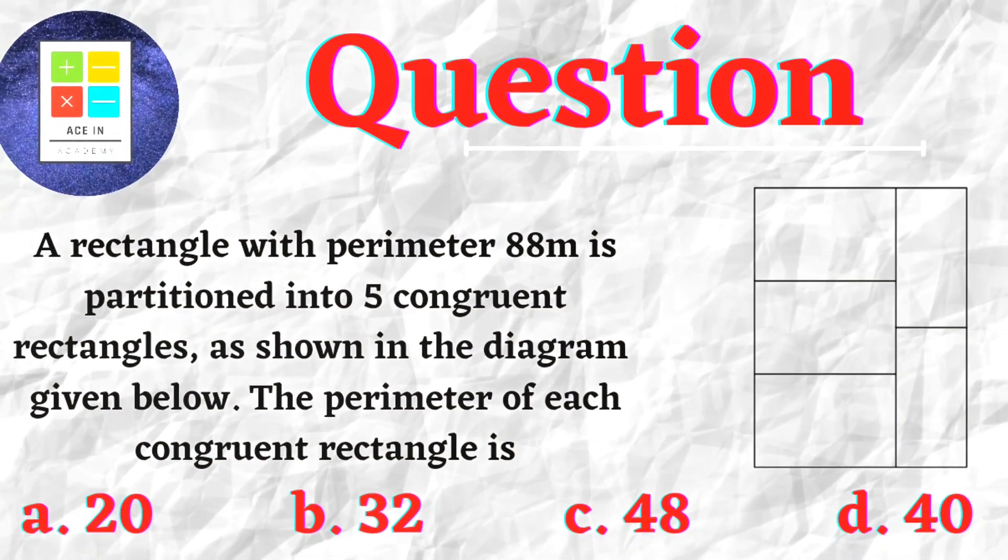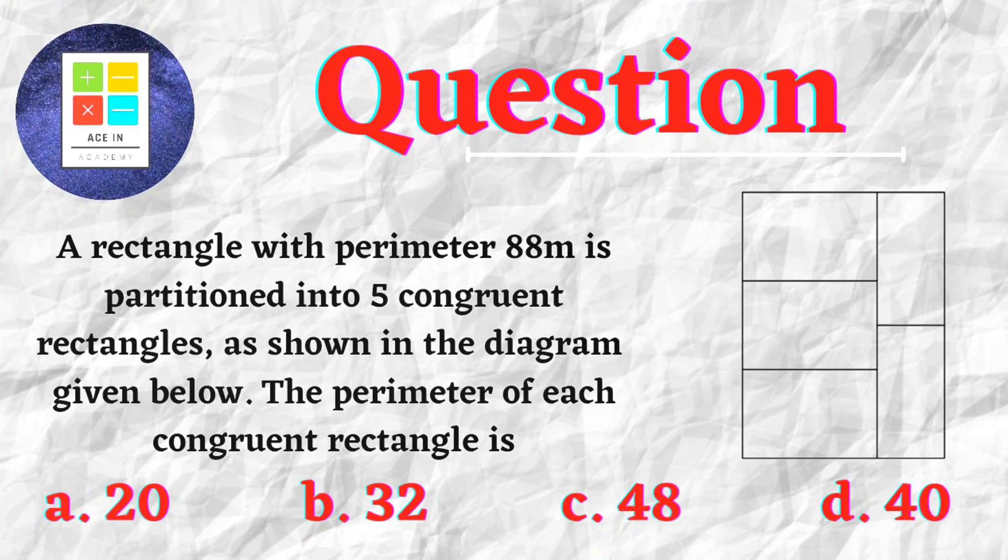Now the question is as follows: A rectangle with 88 meter perimeter is partitioned into five congruent rectangles as shown in the diagram given below. The perimeter of each of the congruent rectangles is...